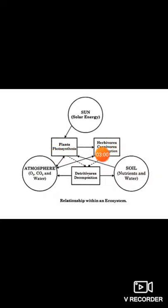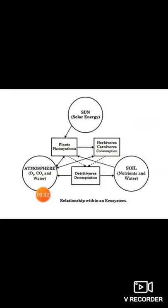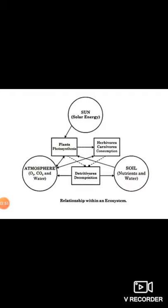Plants produce food which is consumed by herbivores, herbivores are consumed by carnivores, and this series of energy consumption derived from solar energy keeps going. Plants and animals give something and take something from the atmosphere. Plants give out oxygen and take in carbon dioxide, while herbivores and carnivores give out carbon dioxide and take in oxygen, with water consumption happening in parallel by both.